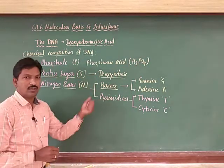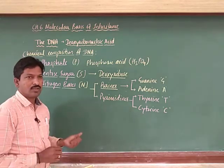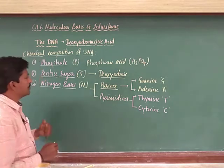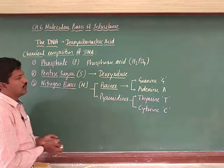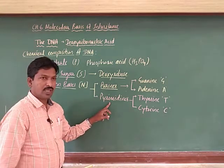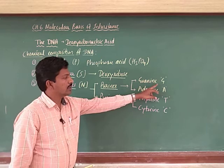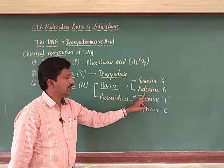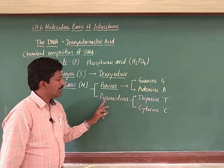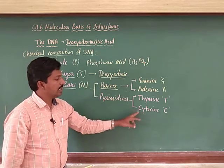Deoxyribose is the pentose sugar — a 5-carbon atom ring structure, a pentagonal structure as seen in the previous video. The nitrogen bases are purines and pyrimidines. Purines are: guanine (G) and adenine (A). Pyrimidines — single-ringed structures — are thymine and cytosine.